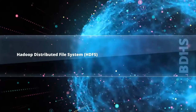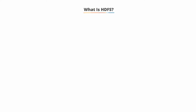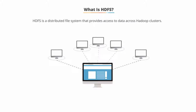Hadoop Distributed File System. What is HDFS? HDFS is a distributed file system that provides access to data across Hadoop clusters. A cluster is a group of computers that work together.